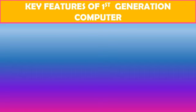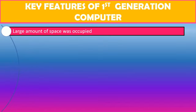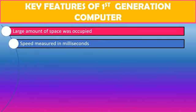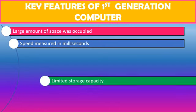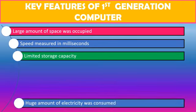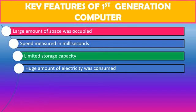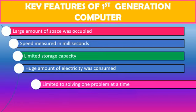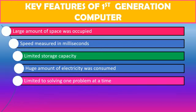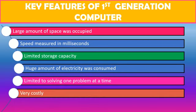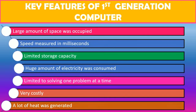The key features of first generation computers are: they used a large amount of space; speed was measured in milliseconds; they had very limited storage capacity; a huge amount of electricity was consumed; they were limited to solving one problem at a time; they were very costly; and a lot of heat was generated.